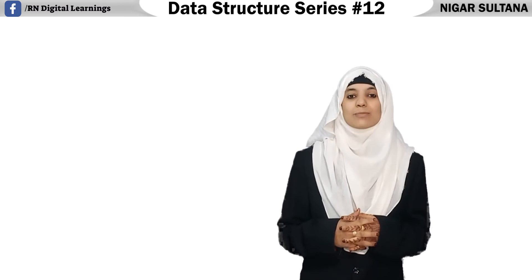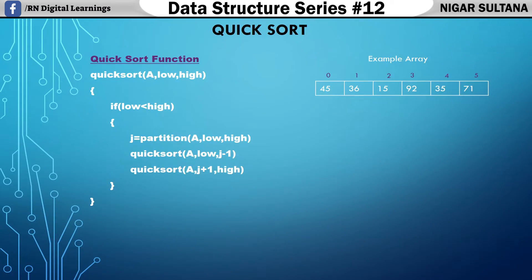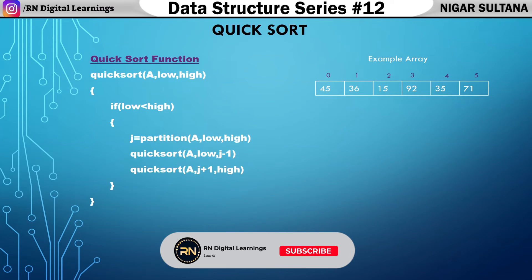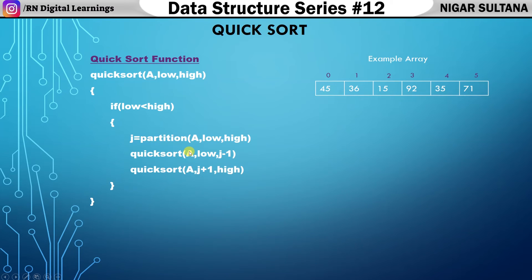Let's move to our computer screen and understand quicksort with the help of a function and an example array. We have used two functions: quicksort and partition. We use partition to divide the array, comparing the pivot element with i and j. For the subarrays obtained, we repeat the quicksort function. Our example array has six elements from index zero to five.